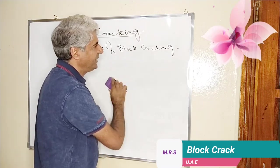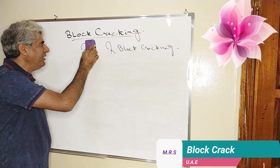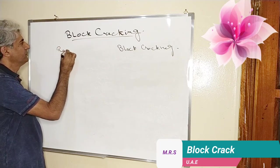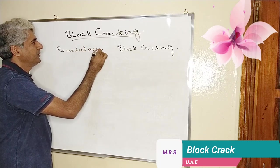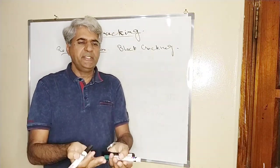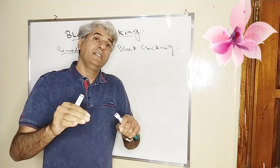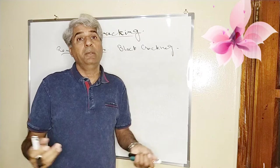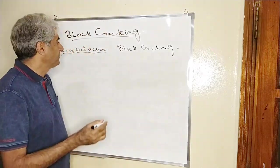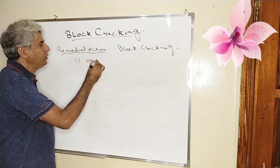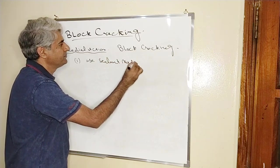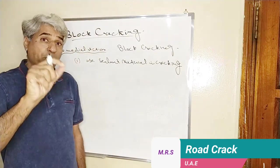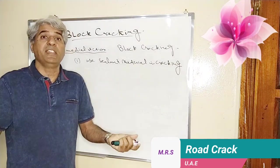If you have any question related to this type of cracking, you can ask me. Now after these causes, I will go to remedial action. Remedial action means you have seen this crack on the surface. If the surface is left untreated, the road is completely damaged and will no more be able to support travelling. The first remedial action is to use sealant material in the cracking. This is common and you can use it where the crack is not of a severe nature.